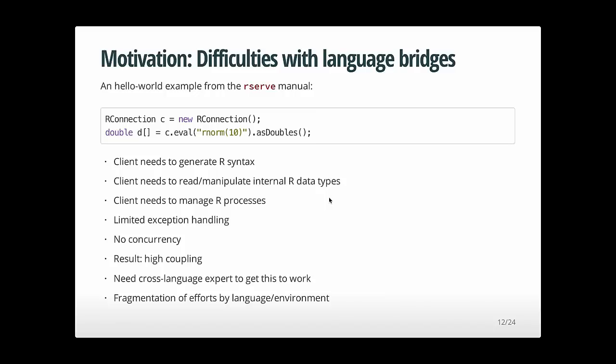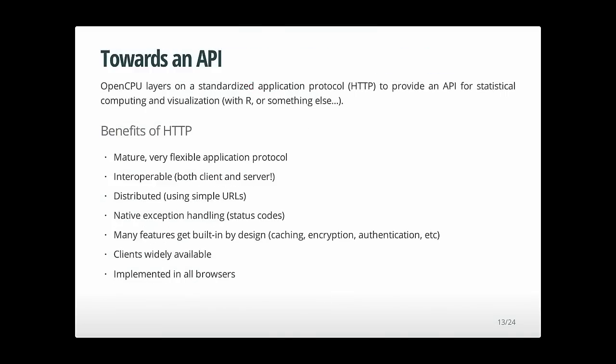The big benefit of OpenCPU is that it layers on HTTP, which is a beautiful, mature, and flexible protocol. It's interoperable, distributed, and has native exception handling with status codes. You get caching, encryption, and authentication all by design. By layering on HTTP rather than directly connecting two languages, you naturally get many benefits. It's really nice to take advantage of an actual application protocol in the middle.